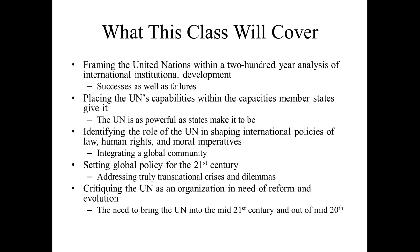We're going to be looking at the capabilities of the United Nations within the capacities that member states give it. One of the big things to learn about institutionalism in international relations is that organizations like the UN, EU, or NATO are only as powerful as the states make them. If people are thinking, is the United Nations ever going to become a world government? Well, it can become a world government by next week if all the member states decide to make it so. But considering that's not going to happen, even within its limited capacities, this class will identify the UN's role in shaping international policies of law, human rights, and probably most importantly, moral imperatives.